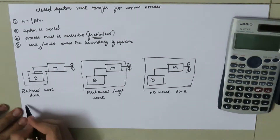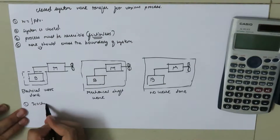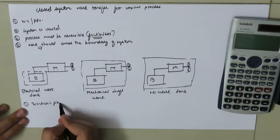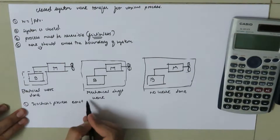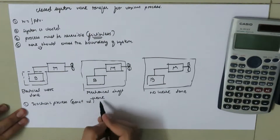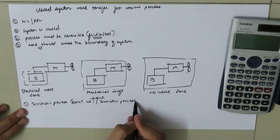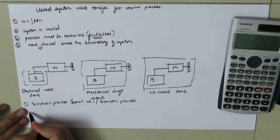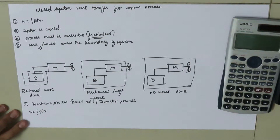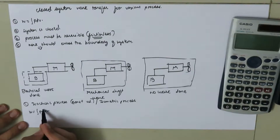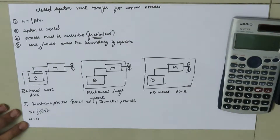First, we are going to deal with the isochoric process, which is also called the constant volume process or the isometric process. In the case of the isochoric process, W equals integration of P dV. Since the change in volume is zero, the work done in the isochoric process is zero.